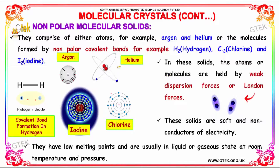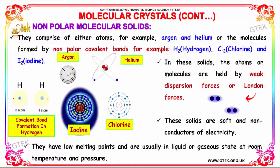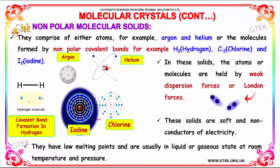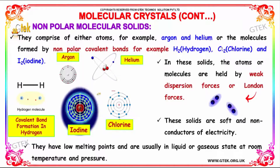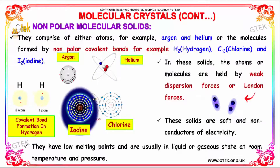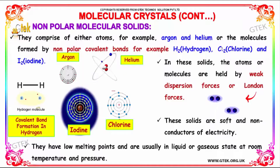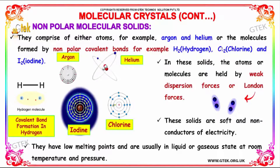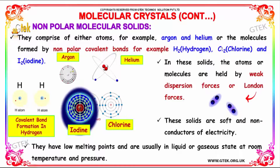Non-polar molecular solids comprise either atoms — for example, argon and helium — or molecules formed by non-polar covalent bonds, such as H2, chlorine, and iodine. In these solids, atoms or molecules are held by weak dispersion forces, also known as London forces. These solids are soft and non-conductors of electricity, with very low melting points, and are usually in liquid or gaseous state at room temperature and pressure.